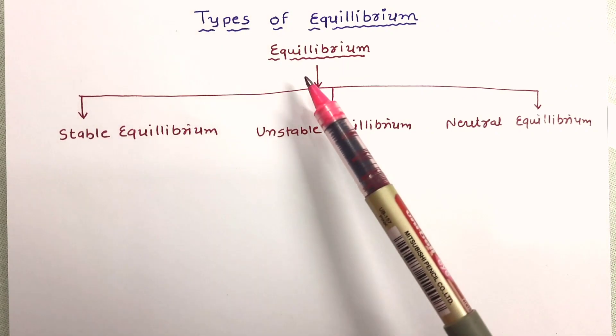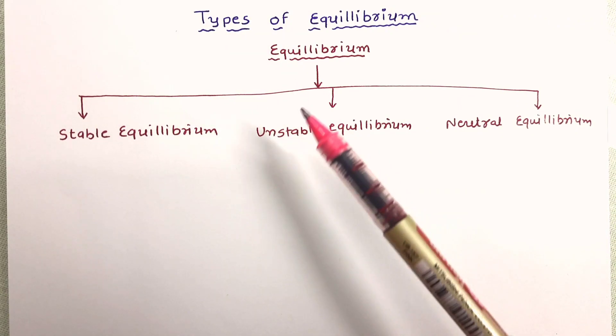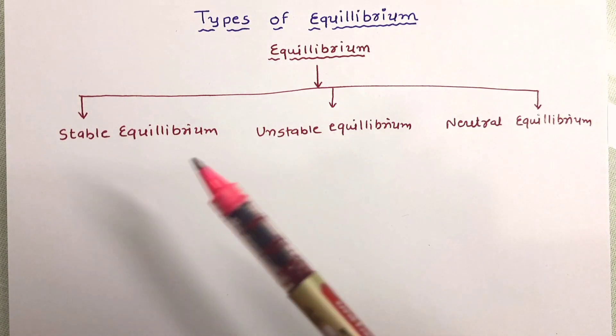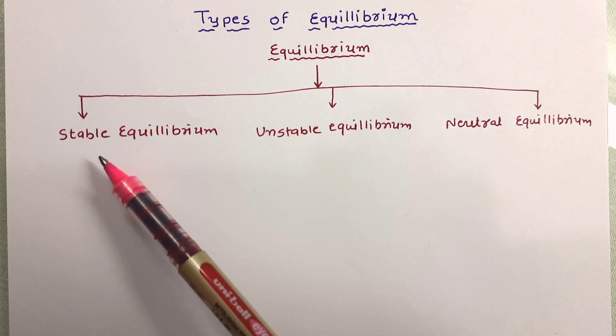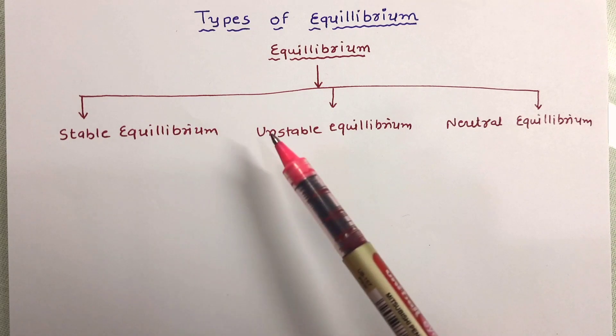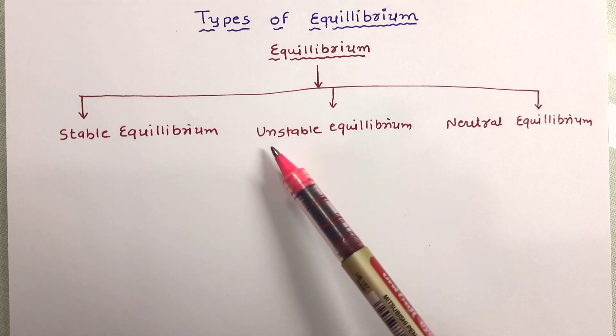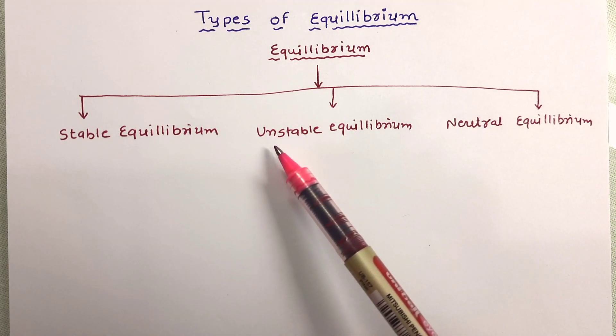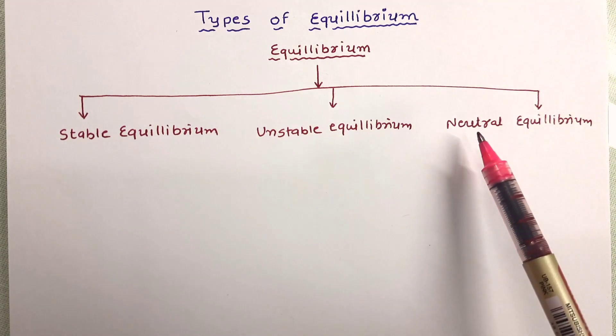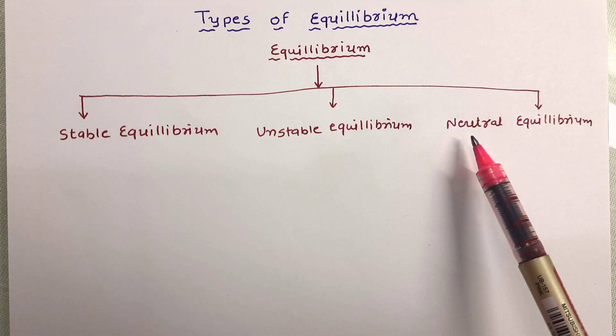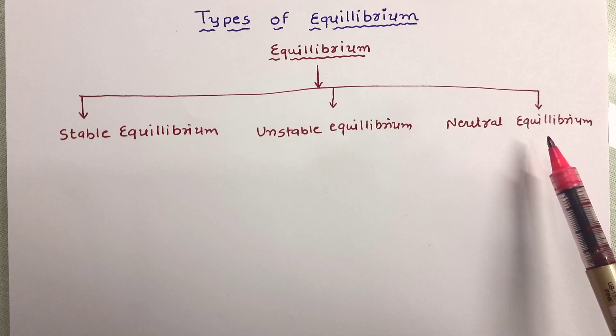There are three types of equilibrium. First is stable equilibrium. Second is unstable equilibrium. And third is neutral equilibrium.